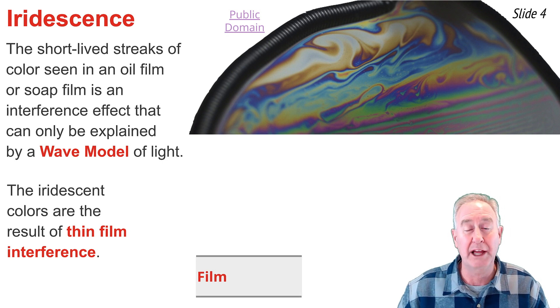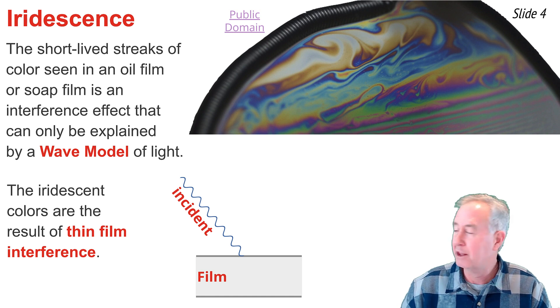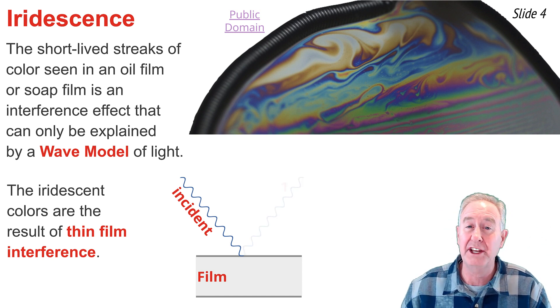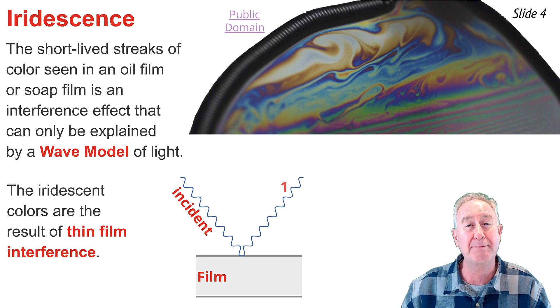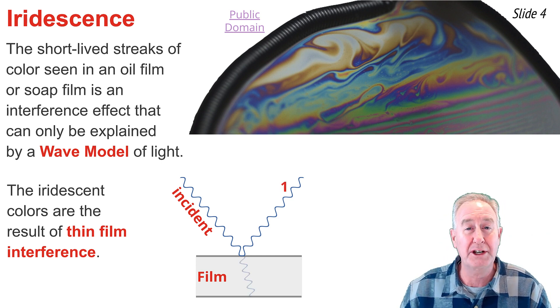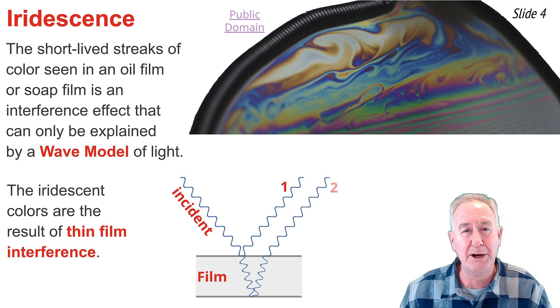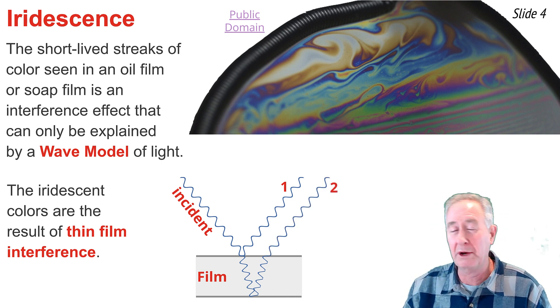As visible light with wavelengths associated with the colors ROY-GBIV strike the top surface of the film, a portion of the light energy is reflected off that top surface and becomes wave 1. But a portion of the energy refracts across the boundary, reaches the bottom surface of the film, reflects off the bottom surface, and refracts back out into the air, forming wave 2.